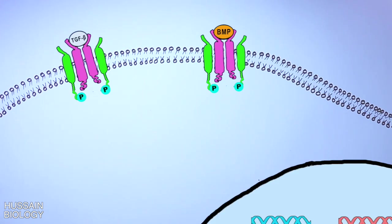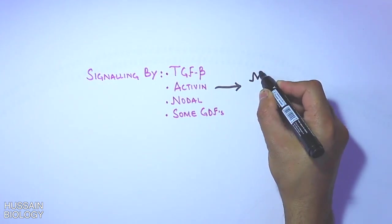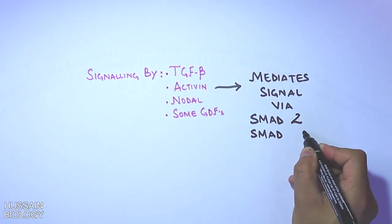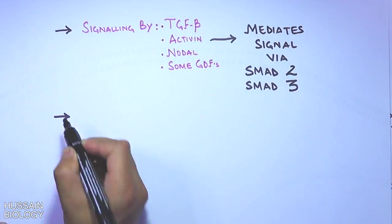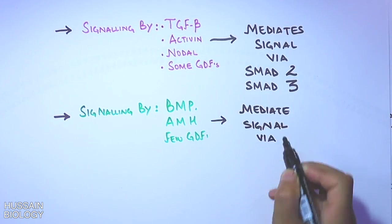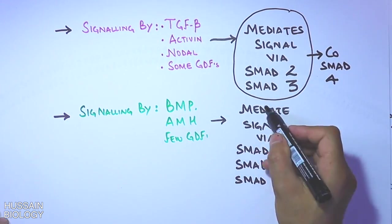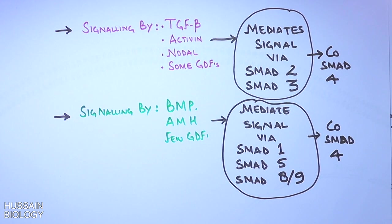Here also we have Type 1 getting activated. Why I have shown two different signaling molecules activating the TGF-beta receptor is because different signaling molecules drive the recruitment of different SMAD molecules within the cell. Signaling by TGF, Activin, Nodal, and some GDFs mediates the signaling via SMAD2 and SMAD3 molecules, whereas signaling by BMPs, AMH, and few GDFs mediates the signaling via SMAD1, SMAD5, and SMAD8 or 9. But later on, both pathways merge at Co-SMAD activation with SMAD4.